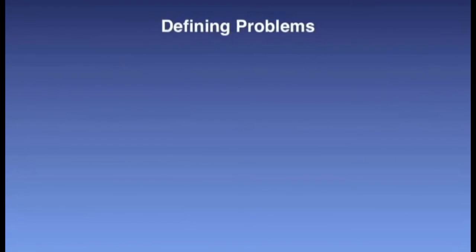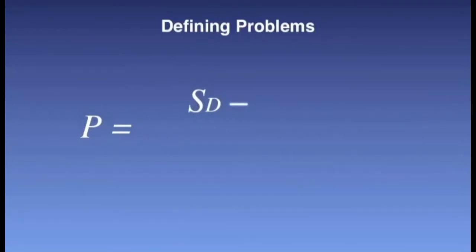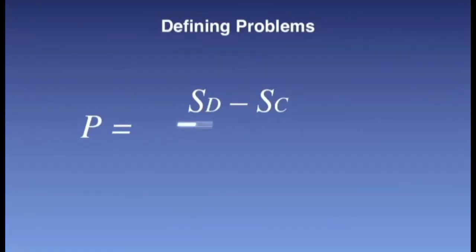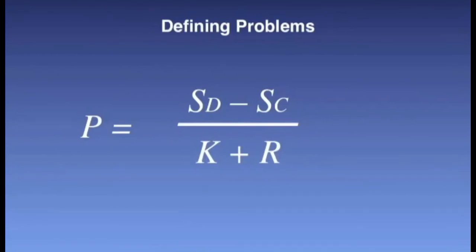In an attempt to operationalize a definition of the concept of problem, see the formula given on the slide in front of you. The problem P is first characterized as the difference between the desired situation S-sub-D and the current situation S-sub-C. Then the level of difficulty that can be expected to resolve the differential between the desired and current situations can be determined, in an inverse relationship with the amounts of relevant knowledge K and resources accessible R by the learner or the problem solver.